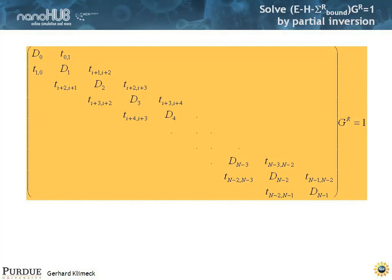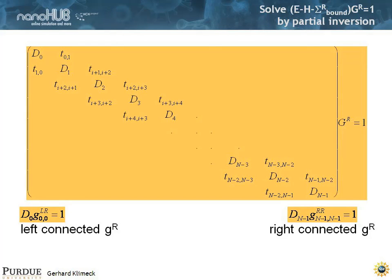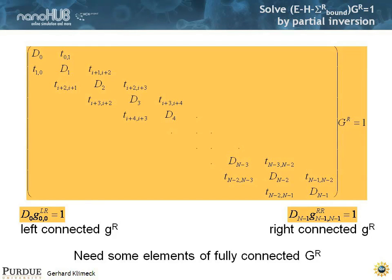Let's forget about the distinction between sigmas on the diagonal, etc. We just write them as diagonal matrix elements and off-diagonal matrix elements, and we want to solve this matrix G^r equal to 1. To get the left-connected Green's function we just start with this block and take the inverse — that gives us G^0 — and we do the same from the right and it gives us G^r on the right.